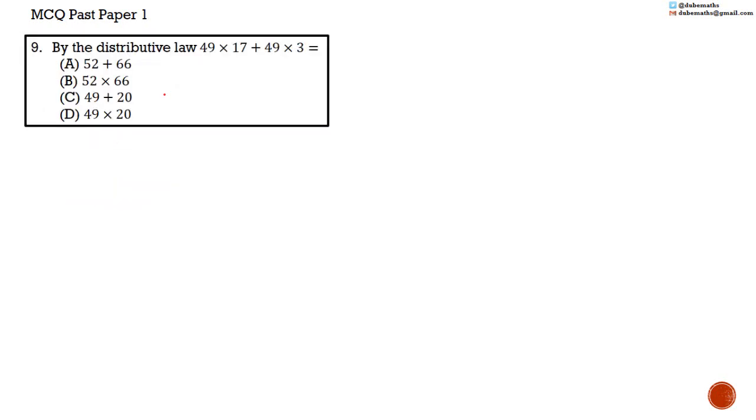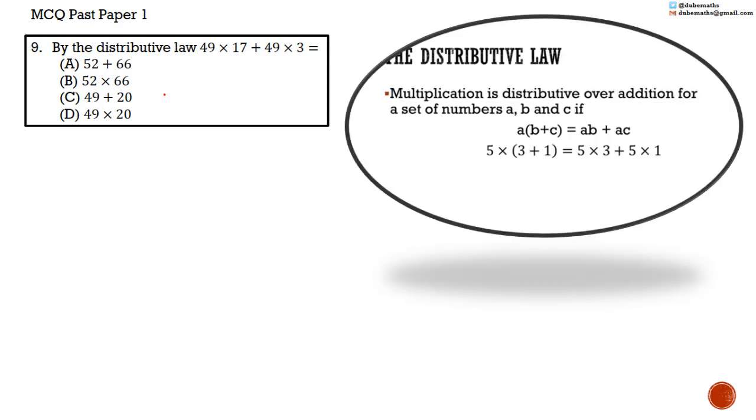Number 9. By the distributive law, 49 multiplied by 17 plus 49 multiplied by 3 is equal to A, 52 plus 66, B, 52 multiplied by 66, C, 49 plus 20, or D, 49 multiplied by 20. The distributive law says that multiplication is distributive over addition. That is, 5 multiplied by 3 plus 1 is the same as 5 multiplied by 3 plus 5 multiplied by 1.